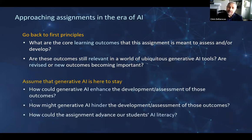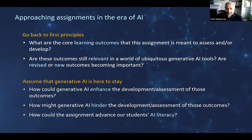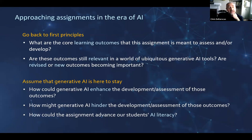Once we decide on the learning outcomes, we can think further: how could generative AI enhance the development and assessment of those outcomes? This can lead us to ways of integrating generative AI into the assessment. Conversely, it's also important to think about how generative AI might hinder the development and assessment of those outcomes, and that leads us to ways of mitigating those possibilities. Because we're still at a stage where the world is coming to terms with this technology, we have an opportunity and perhaps an obligation to help our students advance their AI literacy.